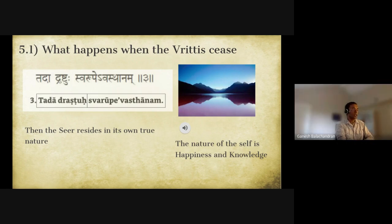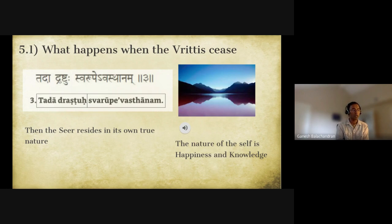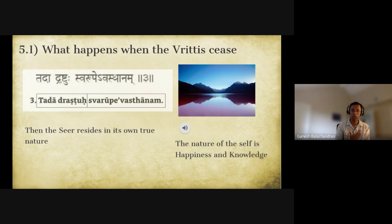The true nature of the self is happiness and knowledge — jnana and ananda. This is the general interpretation. There is a chant: 'jnana ananda mayam devam nirmalas patikakritam adharam sarva vijnanam.' Both the atma (jivatma) and the paramatma have the quality of knowledge and happiness. The purusha is supposed to be pure — drashta drishimatra shuddo api pratyaya anupashya — but because of all the mind activity it gets confused.